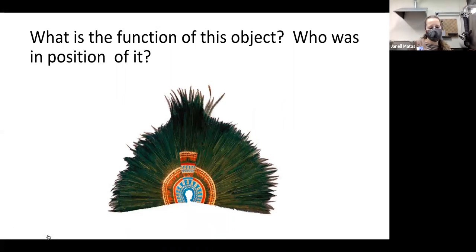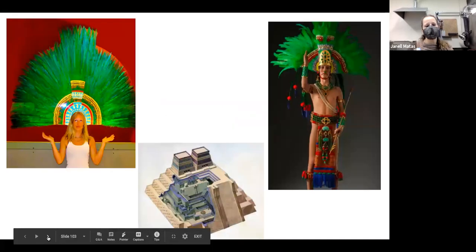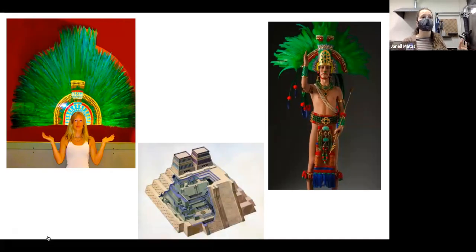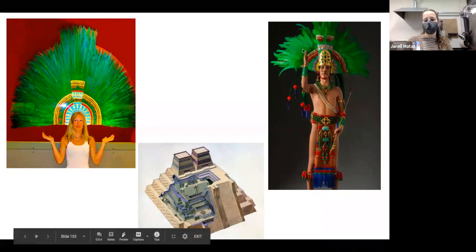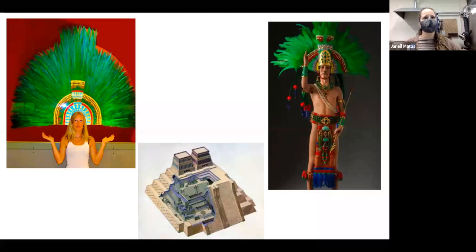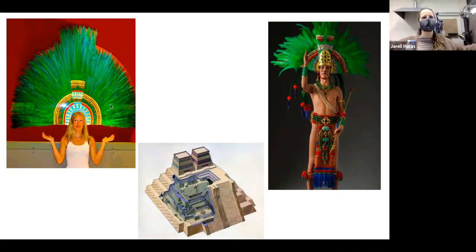The function is that the ruler would wear this out in public for special ceremonies. He might be standing at the top of Temple Mayor or another ceremonial spot in the city, and he'd need to be identified from a distance. You can go into the museum in Mexico City and stand in front of one of these — it's almost like Vegas showgirl feathers on the head. It's really big and dominant, so you would be able to identify the ruler from quite a distance.